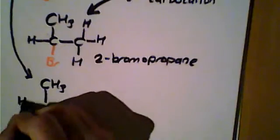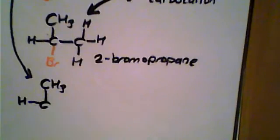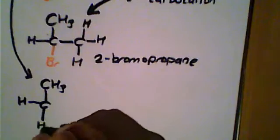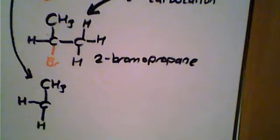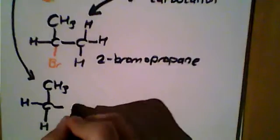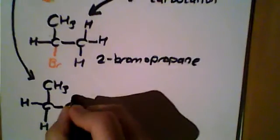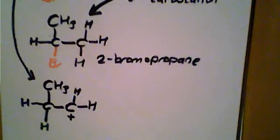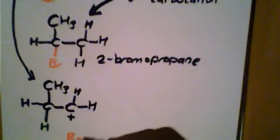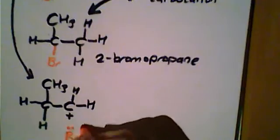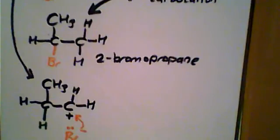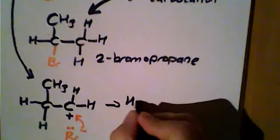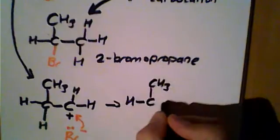So this time the hydrogen from the hydrogen bromide attaches itself to this carbon here, resulting in a primary carbocation here. And the bromine has no option, the bromide ion has no option but to attach itself to carbon number one, resulting in 1-bromopropane.